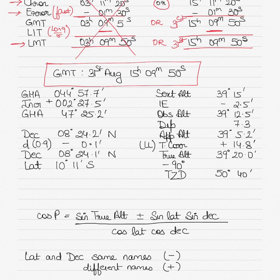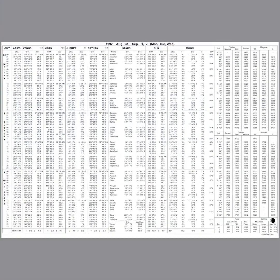We now find the GHA and declination using the GMT date and time we have determined. Going into the 1992 nautical almanac, for 31st August at 1500 hours, we locate the sun column. The GHA is read from the table, and we also note down the declination for that entry.